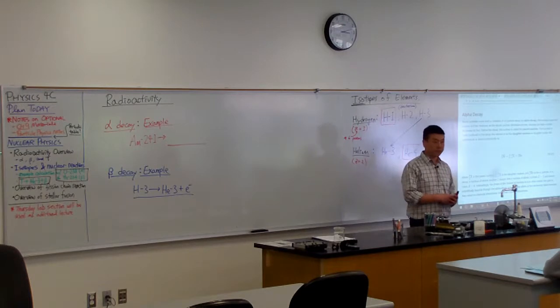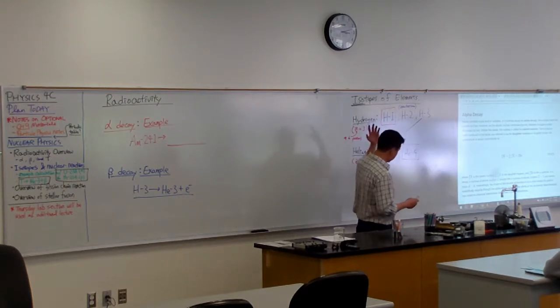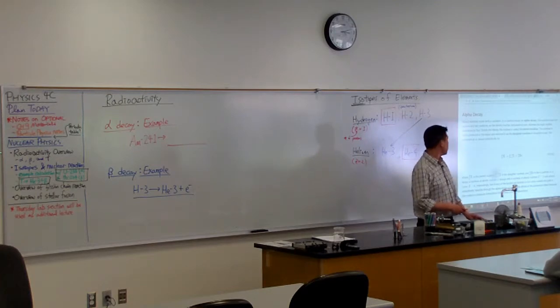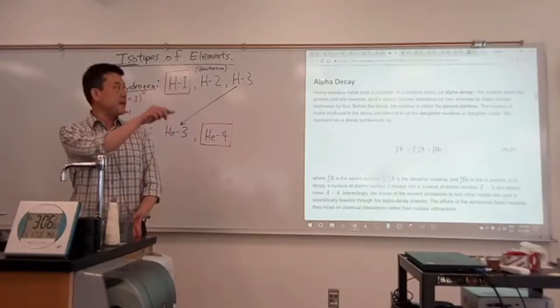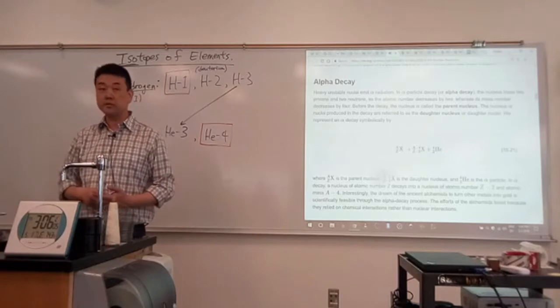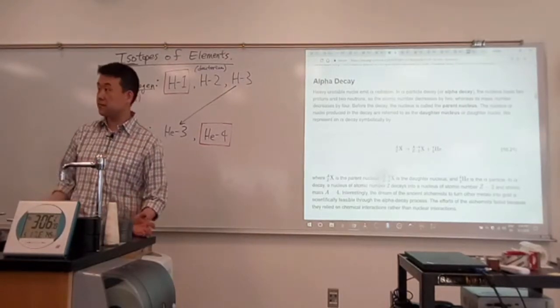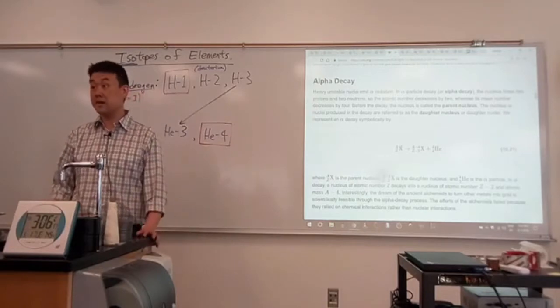So these nuclear reactions, radioactivity that results in alpha, beta, gamma particles, gamma rays, they usually happen in a decay process. So the process that produces alpha ray is called alpha decay. Process that produces beta ray is called beta decay.